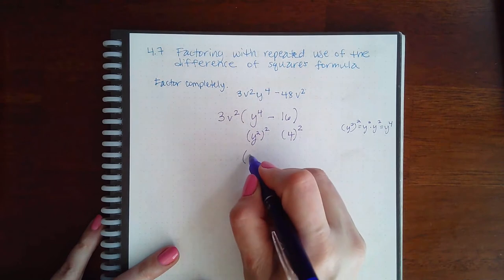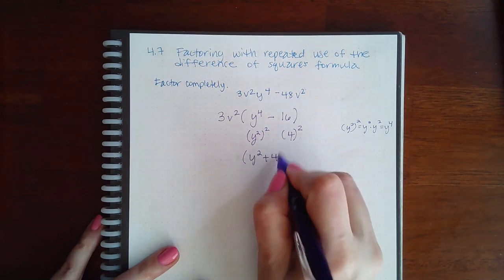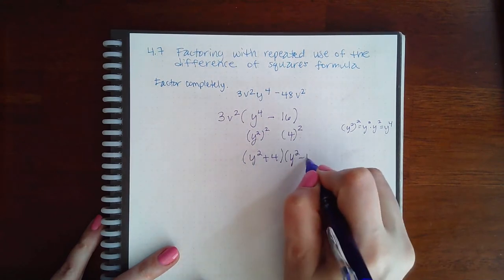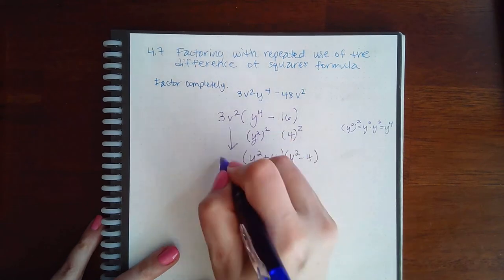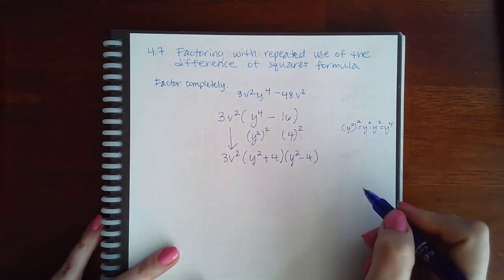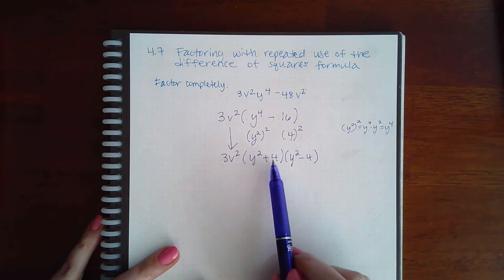Which means when I write this out, it's going to be y squared plus 4, and then y squared minus 4. Don't forget the GCF from the beginning. However, this is perfect squares but a plus in the middle.